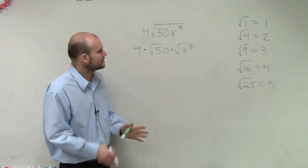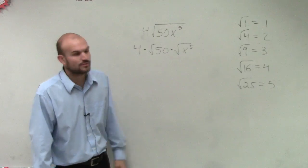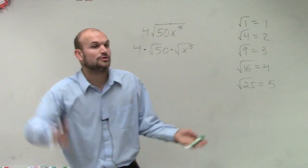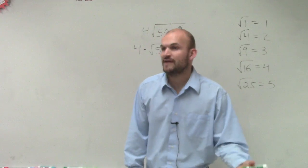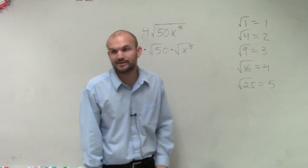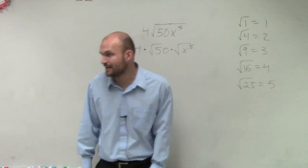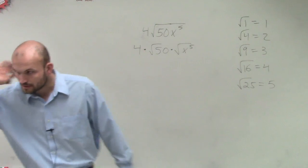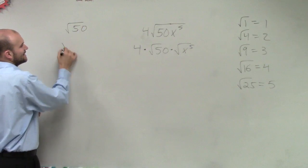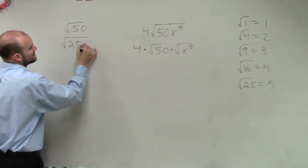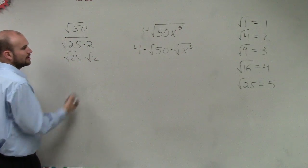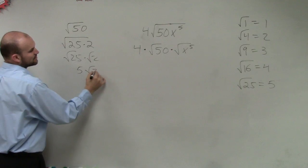Looking up here, we can see the square root of 50. I now want to simplify the square root of 50. You can look at this by doing your factoring tree, or we can look at our square numbers and say, how could I rewrite the square root of 50 as a product of one of my square numbers? I can rewrite that as the square root of 25 times 2, which is the square root of 25 times the square root of 2, which is 5 times the square root of 2.